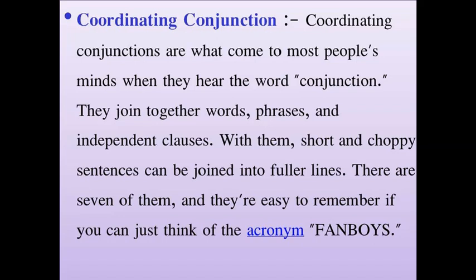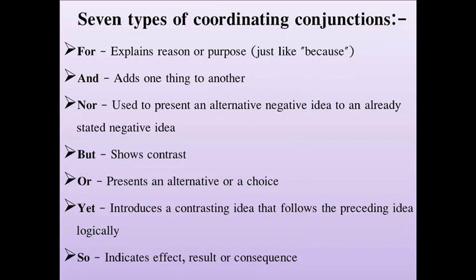FANBOYS stands for: F, A, N, B, O, Y, S — that is 'for', 'and', 'nor', 'but', 'or', 'yet', and 'so'. This is how we can remember these seven types. Let's learn about each of these seven coordinating conjunctions.